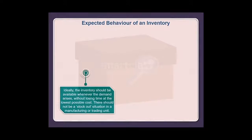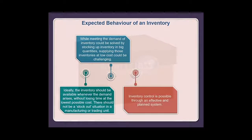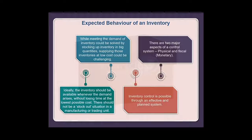Ideally, the inventory should be available whenever demand arises, without losing time, at the lowest possible cost. There should not be a stock-out situation in a manufacturing or trading unit. While meeting demand could be solved by stocking up inventory in large quantities, supplying those inventories at low cost could be challenging. Inventory control is possible through an effective and planned system. There are two major aspects of a control system: physical and fiscal or monetary.